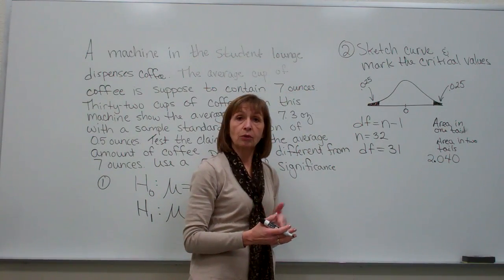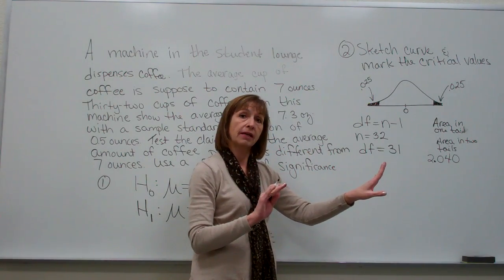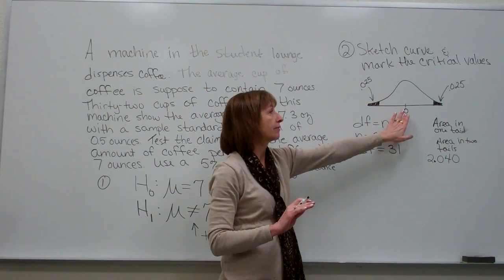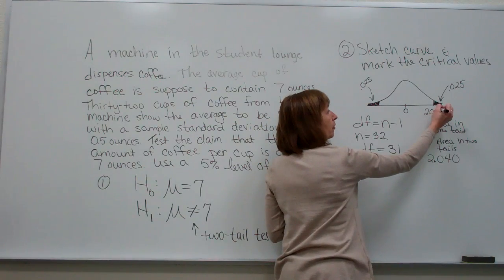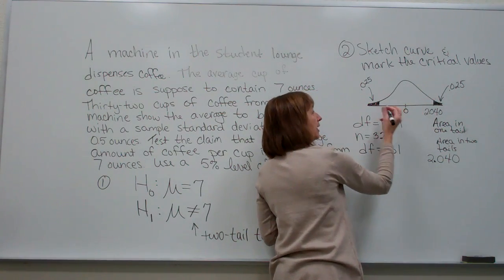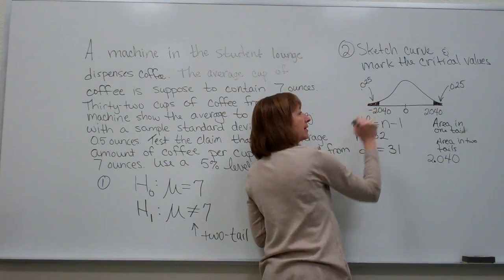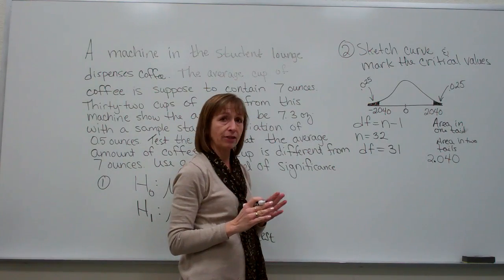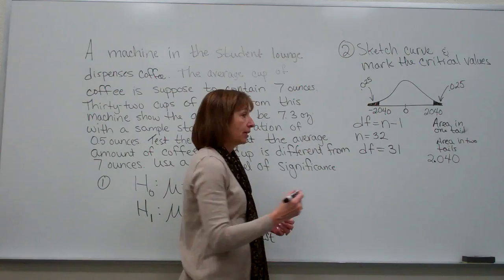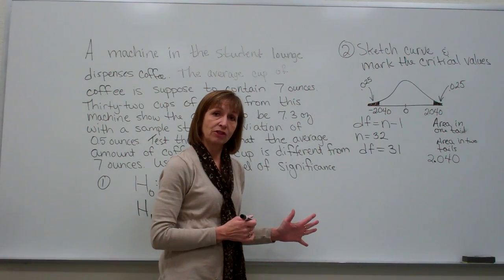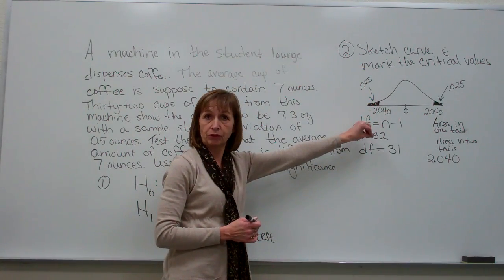The student's t distribution, like the standard normal distribution, is symmetrical about the mean, with positive numbers to the right and negative numbers to the left of zero. So we have a positive 2.040 at the right tail cutoff and a negative 2.040 at the left tail cutoff. Those are our critical values — our deal breakers — when we compare our test statistic. So far we've only used the sample size n equals 32 to get degrees of freedom.